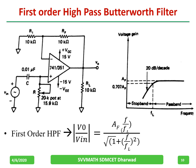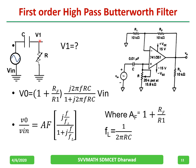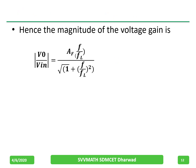Writing the equation for V1: only the positions are changed, and the gain is given by 1 plus Rf by R1 into V1. We get V-out by V-in equal to Af into this term, where Af is given by 1 plus Rf by R1, and fl is given by 1 by 2πRC. The magnitude of the voltage gain is given by this equation.